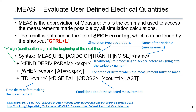The .MEAS command covers DC sweep, DC operating point, transient simulation, DC transfer function, and noise. The result is saved in the SpiceError log file, with the file extension LOG.